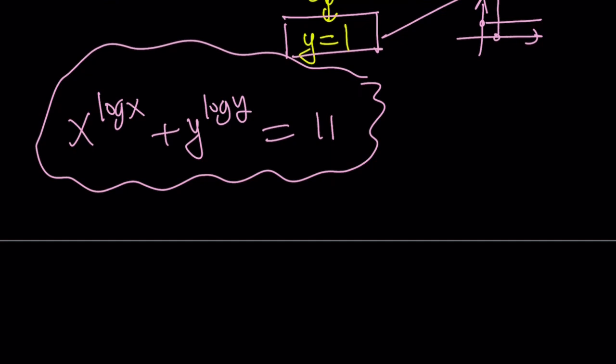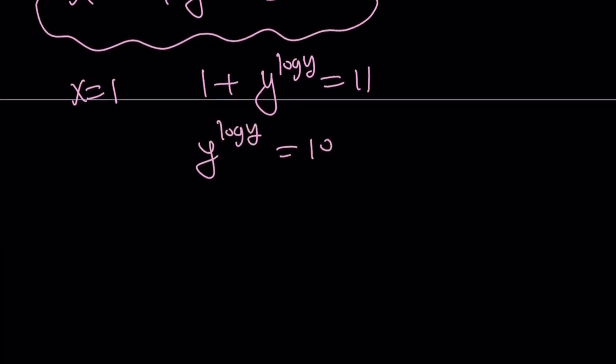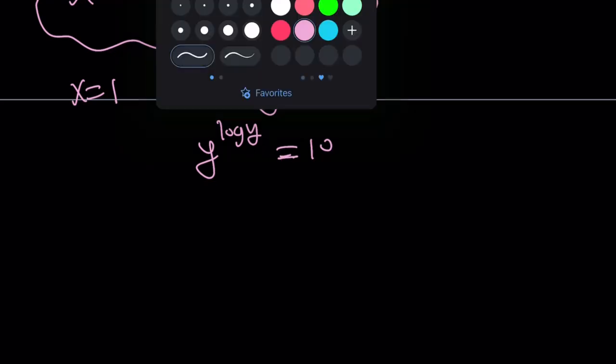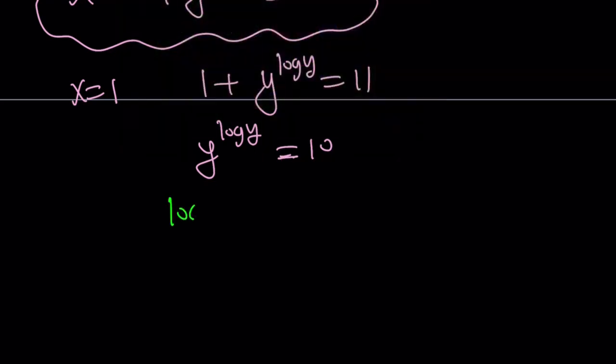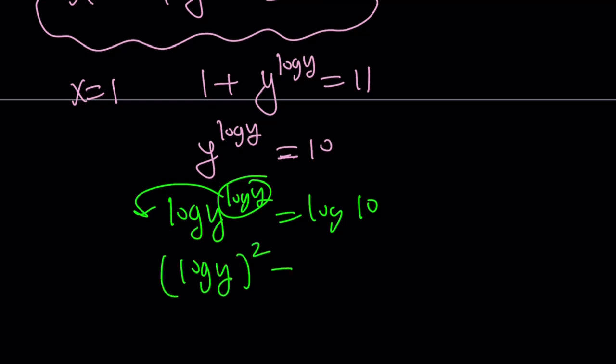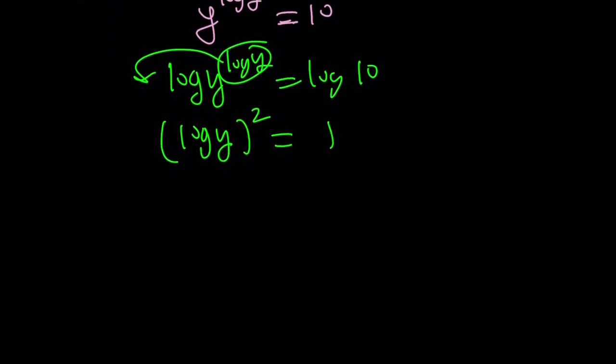Anyways, so let's go ahead and substitute x equals 1 into the equation. That gives us 1 plus y to the power log y equals 11, which implies y to the power log y equals 10. So this is another equation we need to solve. But we can easily solve this equation by logging both sides. Otherwise, if you log both sides, you get log y times log y, which is log y squared. And log 10 is 1 because it's base 10. The common log of it.